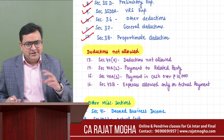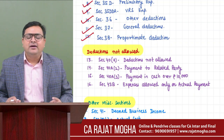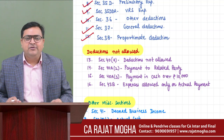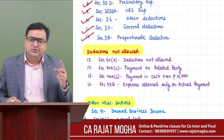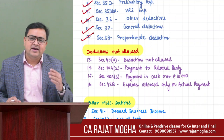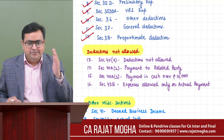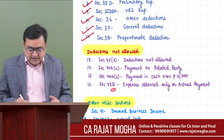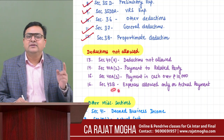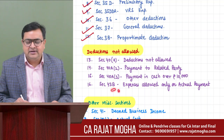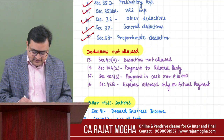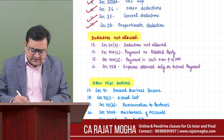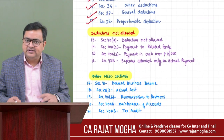Section 43B is a very important section. It contains a list of six or seven expenses which are allowed only when they are actually paid up to the due date of ROI. This section has become more important because there is a small amendment also in this section. We will discuss these four sections today, and some other miscellaneous sections in the next lecture.